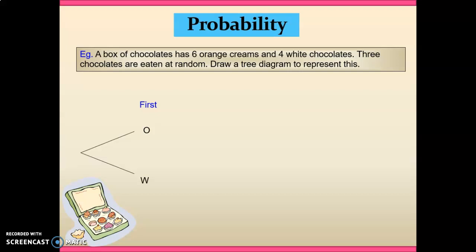Now because there are 10 chocolates in the box, six of which are orange creams, we can actually write that probability down as 6 out of 10 are our orange creams. And of course that means 4 out of 10 are our white chocolates.